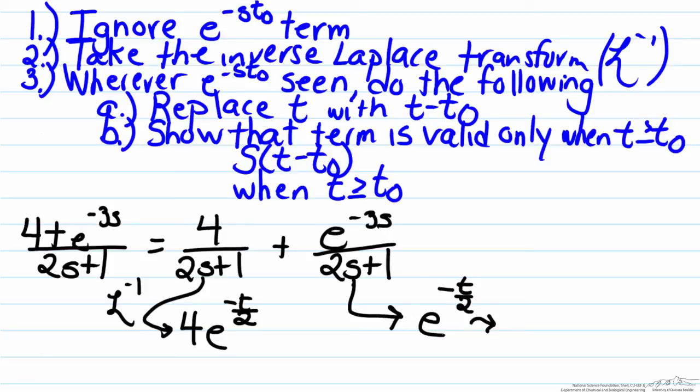Now we have to evaluate step three. The first thing we do is replace t in this with t minus t₀, where t₀ is the dead time here, which is 3. And the next step is to show this is valid only when t is greater than or equal to t₀.